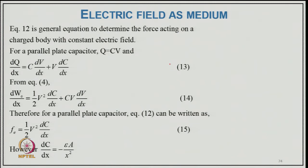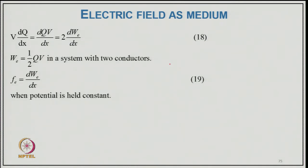This is the general equation for force acting on a charged body with constant electric field. For a parallel plate capacitor, q = CV and dq/dx = C·dV/dx + V·dC/dx, giving d(W_e)/dx = ½V²·dC/dx + CV·dV/dx. Therefore for a parallel plate capacitor, F = ½V²·dC/dx, where dC/dx = −εA/x². This gives f_e = d(W_e)/dx when potential is held constant. Special cases: Case 1 (isolated system, constant charge): F = −dW_e/dx. Case 2 (fixed potential): free charge exists on conductors maintained at fixed potential by actual energy sources.